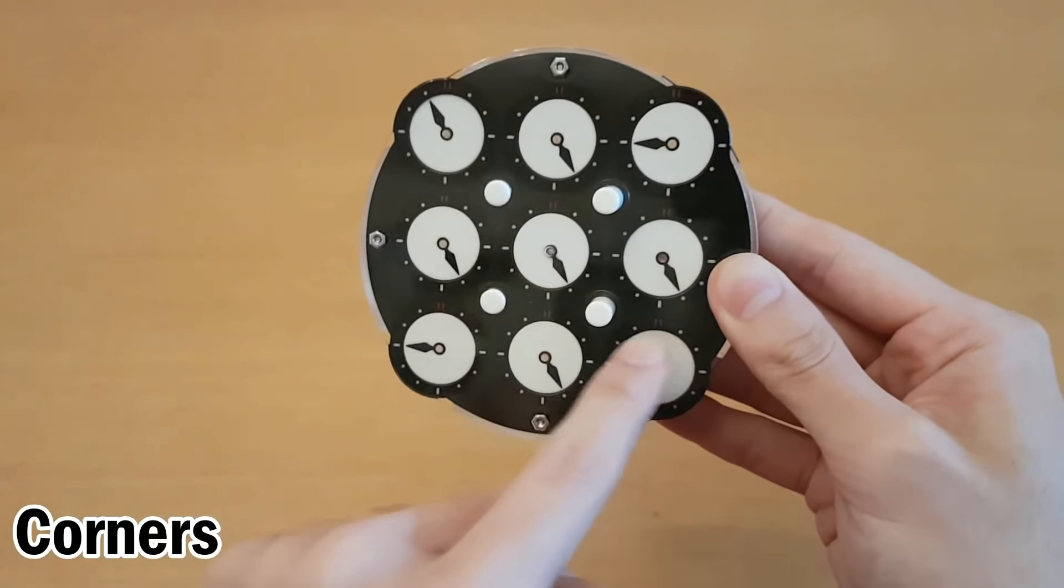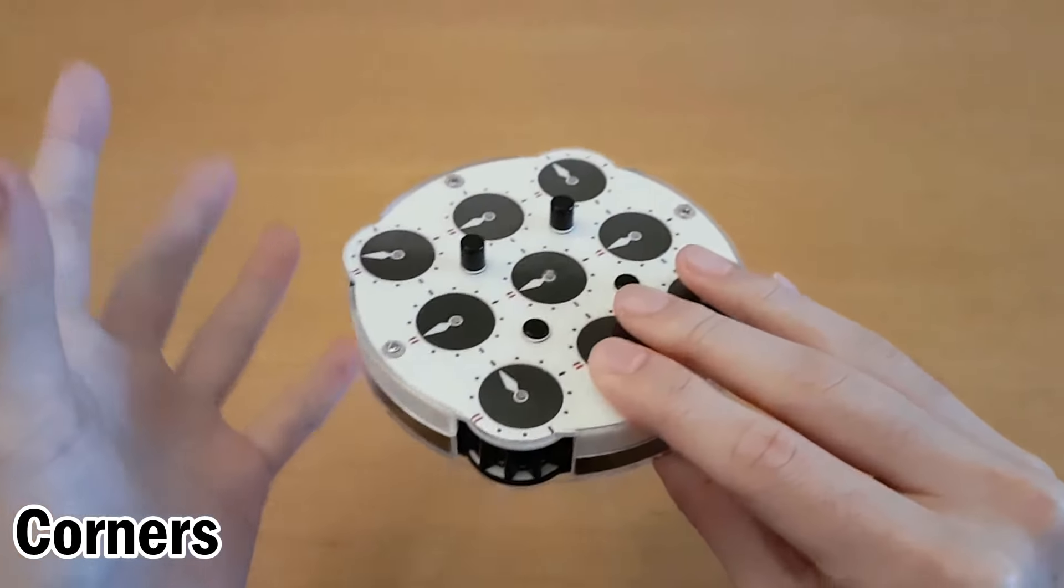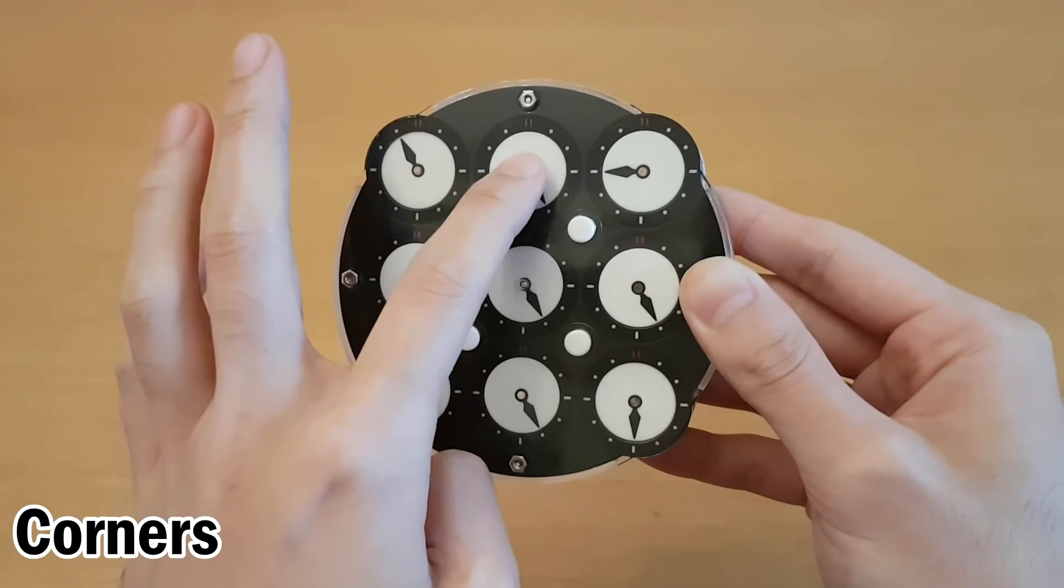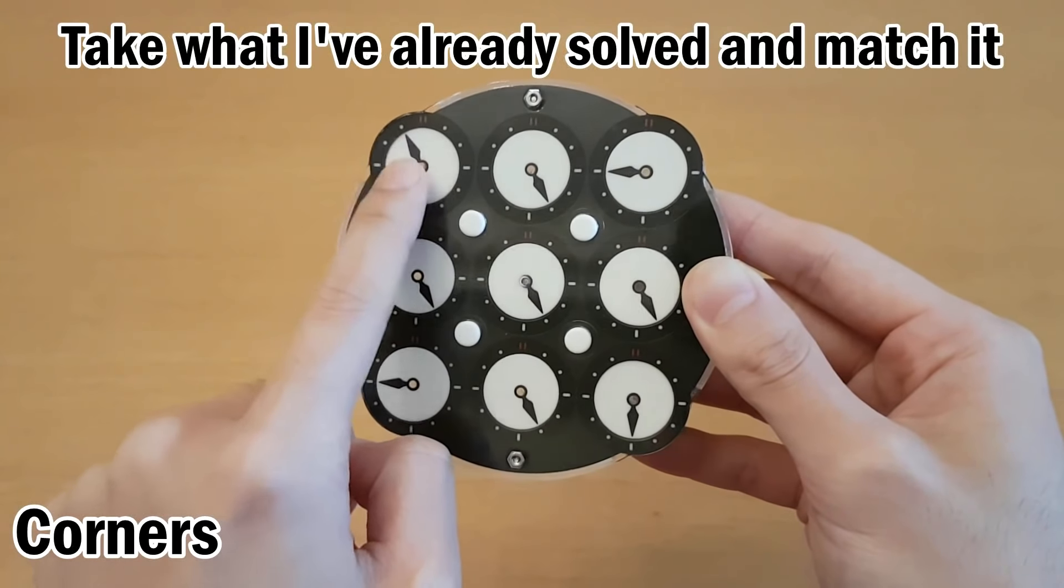The next thing we'll do is solve these four corners, which will actually solve the corners for both sides. Again, don't think about it like we're solving this clock. Think about it like we're getting every clock we've solved to match that one.